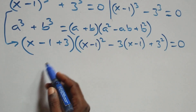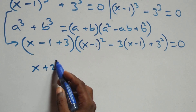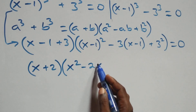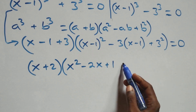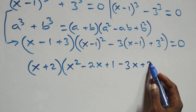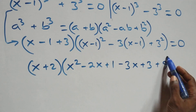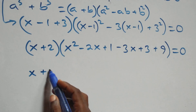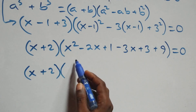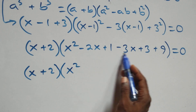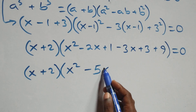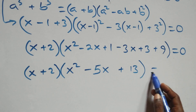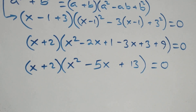Here, minus 1 plus 3 gives plus 2, so we have (x + 2) times the bracket. Expanding the bracket: x squared minus 2x plus 1 minus 3(x minus 1) plus 9, which becomes x squared minus 2x minus 3x, giving minus 5x, then 1 minus 3 plus 9 gives plus 7... let me continue expanding carefully to get plus 13.